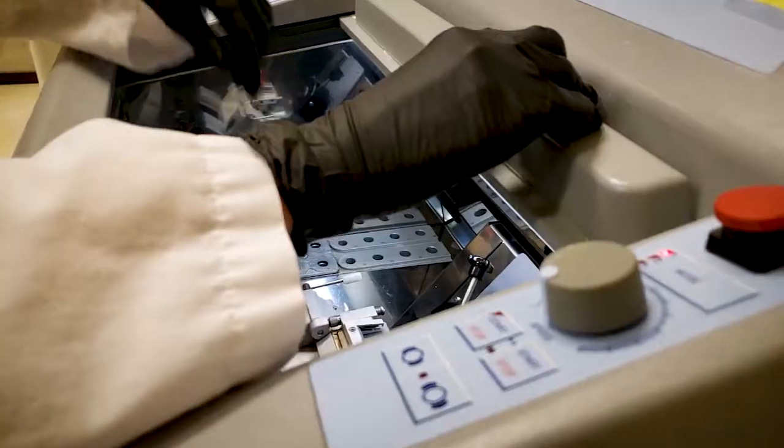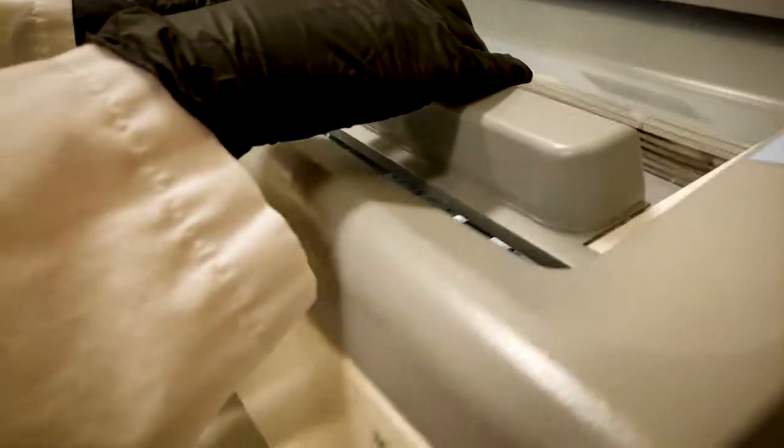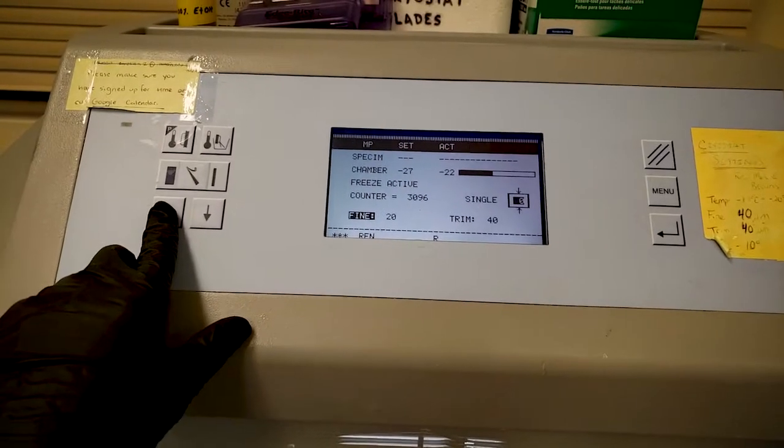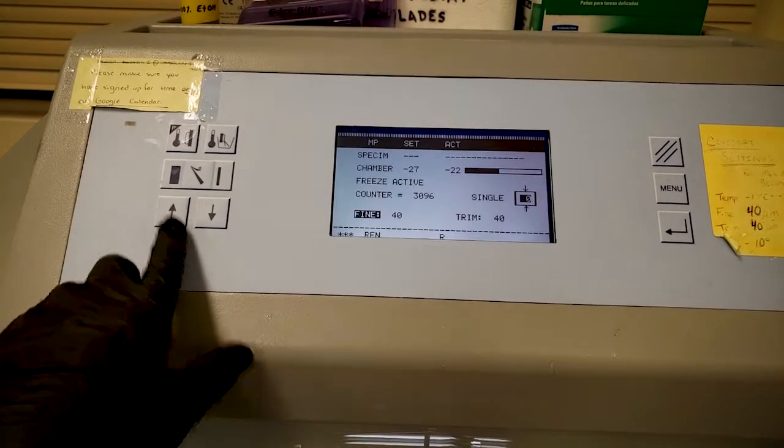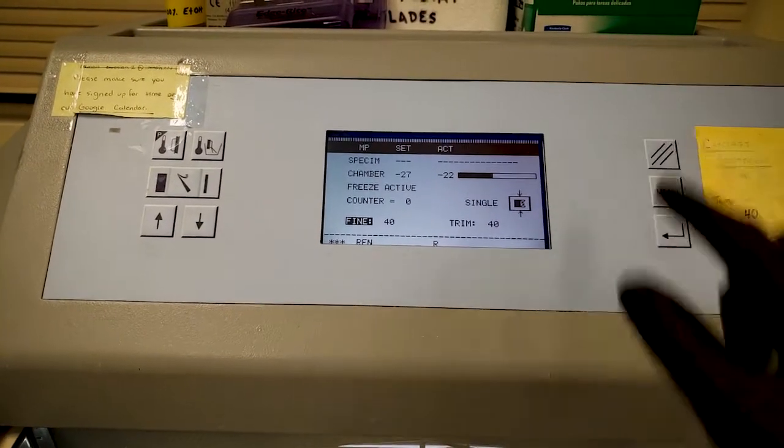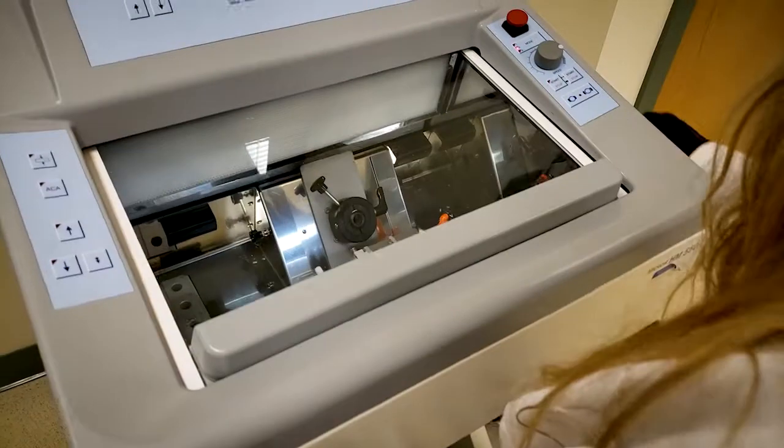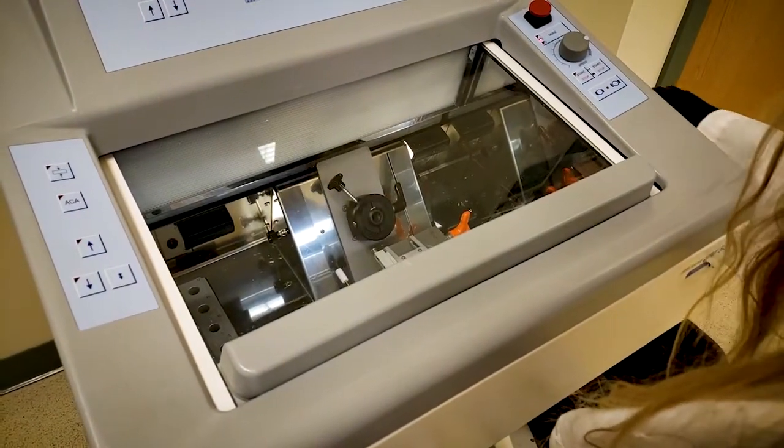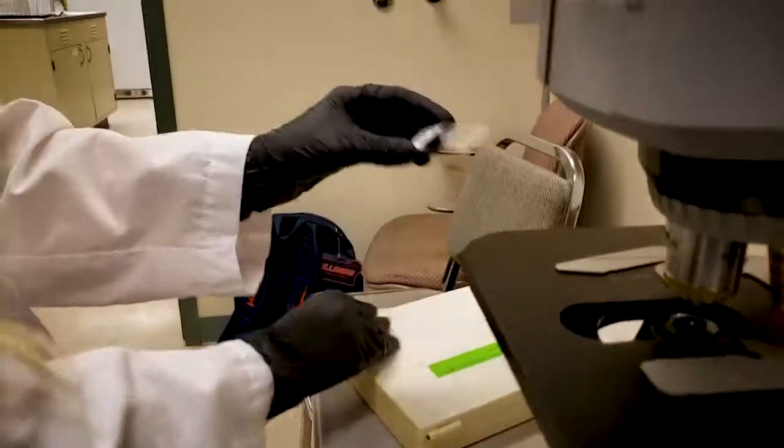A cryostat contains a chamber that can maintain very low temperatures. Laboratories use a cryostat to preserve frozen tissue samples, while a microtome, an extremely sharp cutting instrument mounted inside the cryostat, slices the tissue into pieces thin enough to be observed under a microscope.